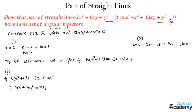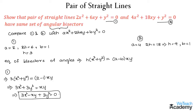Transferring xy to the left-hand side, we get 3x² − xy + 3y² = 0. This equation represents the pair of bisectors of angles for equation 1. Let us call this equation 3.